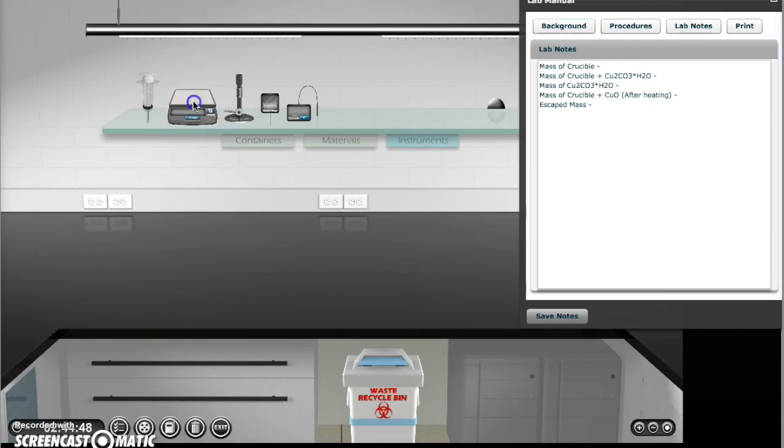First, we're going to get the scale from the instruments tab and place it on the counter. The scale will be used to record the mass of the chosen objects.